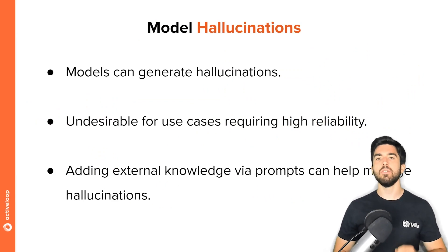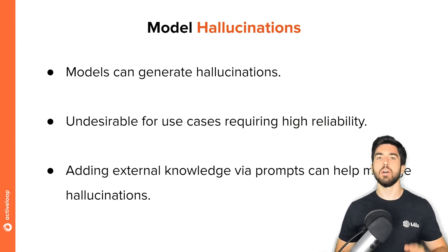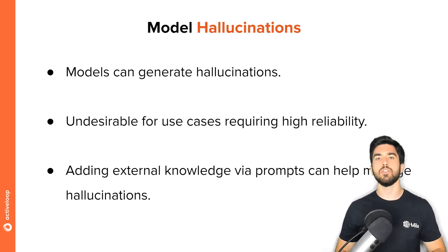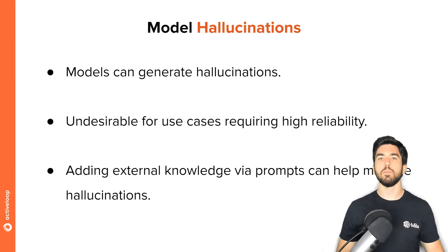One way of giving knowledge to LLMs is via prompts. However, LLMs are limited by their context size — that is, the maximum number of tokens the model can process, which is determined by the specific implementation of the LLM. For example, if you are using the GPT-3 model, the maximum number of tokens supported by the model is 2,049.